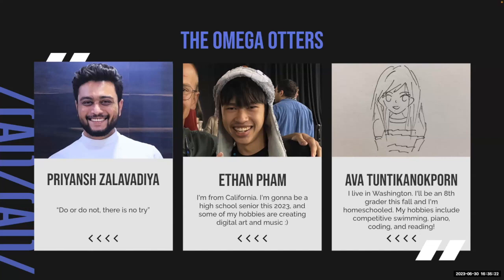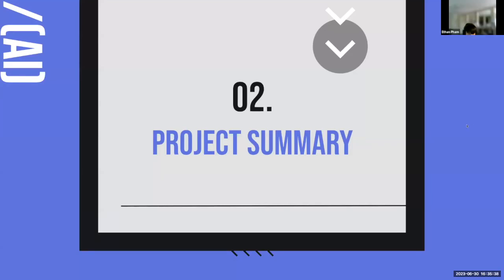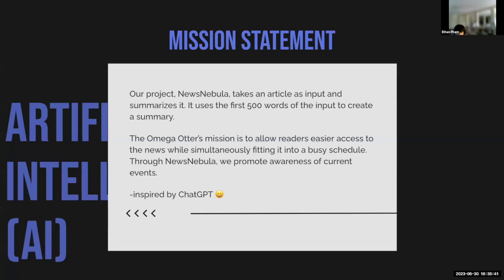My name is Eva. I'll be an eighth grader this fall and my hobbies include competitive swimming and coding. I worked on the website design. Our project, News Nebula, takes the user's inputted article — they paste in an article they want — and it uses the first 500 words of that input to create a summary as output. Our goal was to support understanding of the news and allow people to understand it more efficiently. It was also inspired by ChatGPT and how it functions.